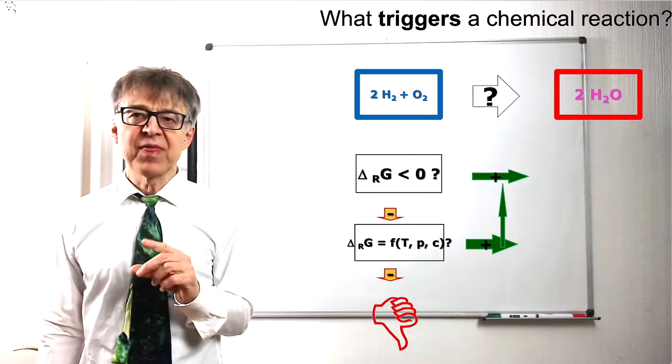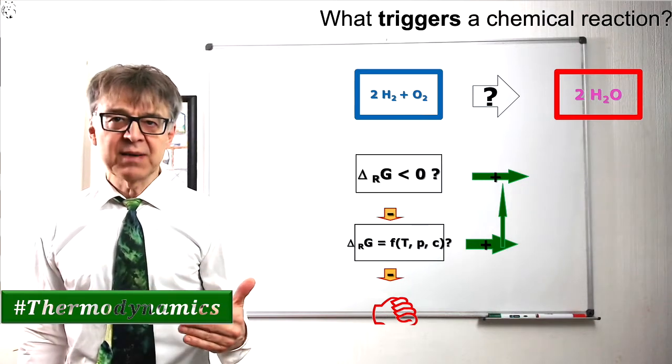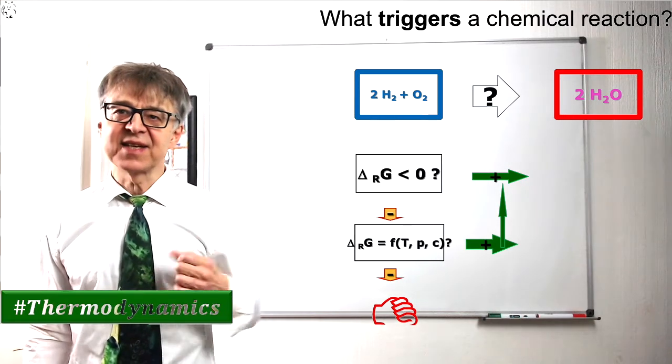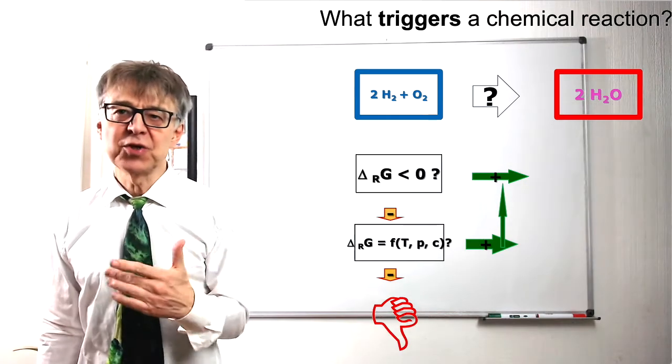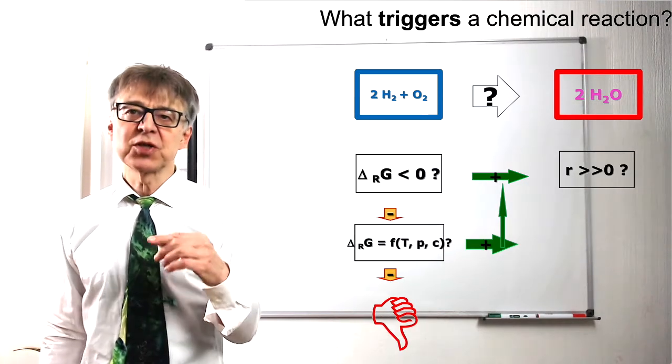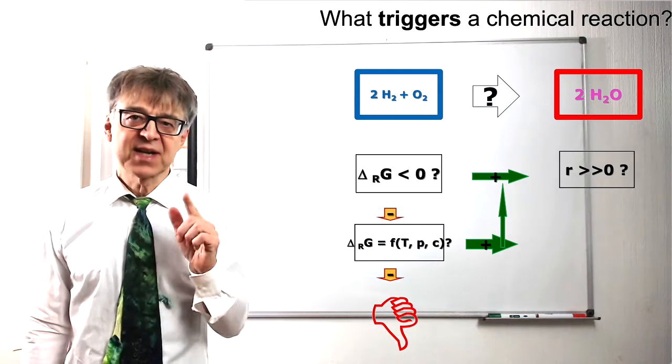If, on the other hand, there is an affinity, thermodynamics gives a green light signal, so to speak. However, whether the reaction actually takes place at a reasonable rate is a question to be considered by chemical kinetics.